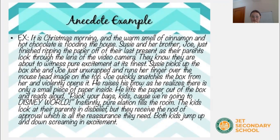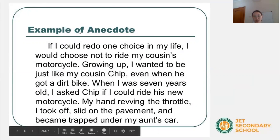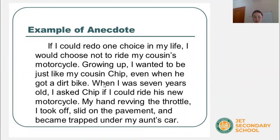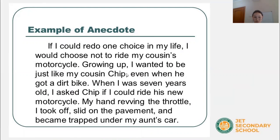So these anecdotes use the verb tenses that we have learned. For example: 'When I was seven years old, I could ride his new motorcycle.' And: 'Growing up, I wanted to be just like my cousin Chip.' And also: 'When I was seven years old, I wanted to be able to ride his new motorcycle.' These show past simple and past continuous tense in use.